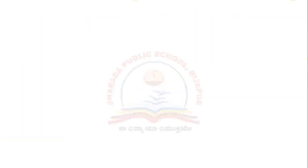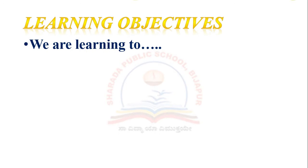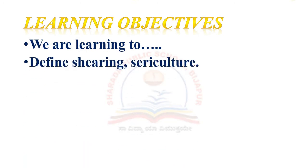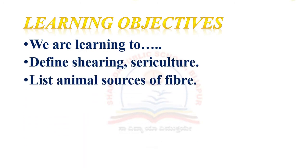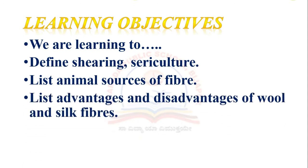Our objectives for today's session are: we are learning to define shearing and sericulture, list animal sources of fiber, and list advantages and disadvantages of wool and silk fibers.